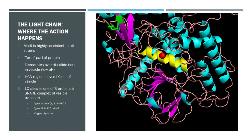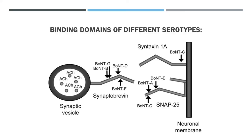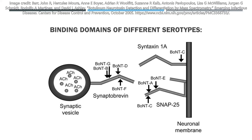It's interesting to note that serotype C will not only cleave SNAP-25, but it also cleaves another protein as well. This figure demonstrates how slight differences in the light chain not only affect which protein it binds to, but where on that protein. For example, serotypes A, C, and E all bind to the same protein, but they don't bind in the same location. The light chain, like many proteins, is highly selective.